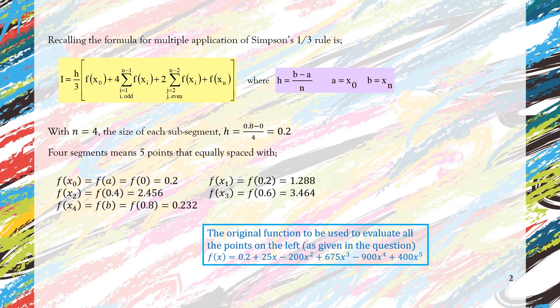As we have four segments, it means we have five points that are equally spaced. So we have f(x₀), f(x₁), f(x₂), f(x₃), and f(x₄). We substitute all the values into the function to get the value of the function. For example, looking for f(x₁), we substitute 0.2 into the function in blue and we will get 1.288.